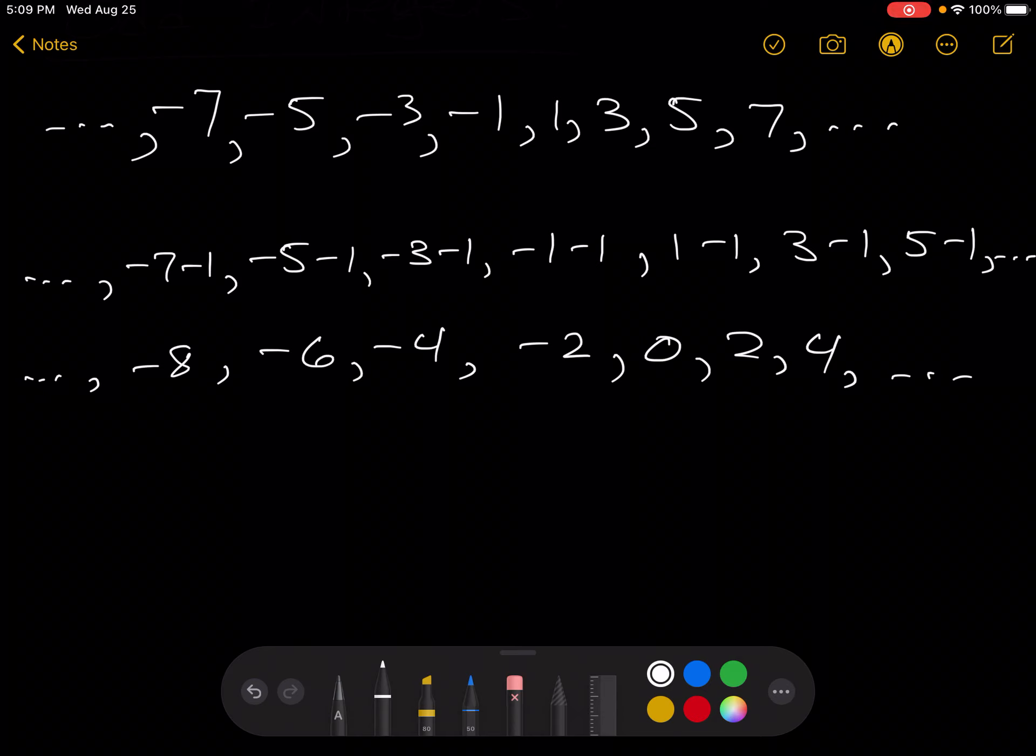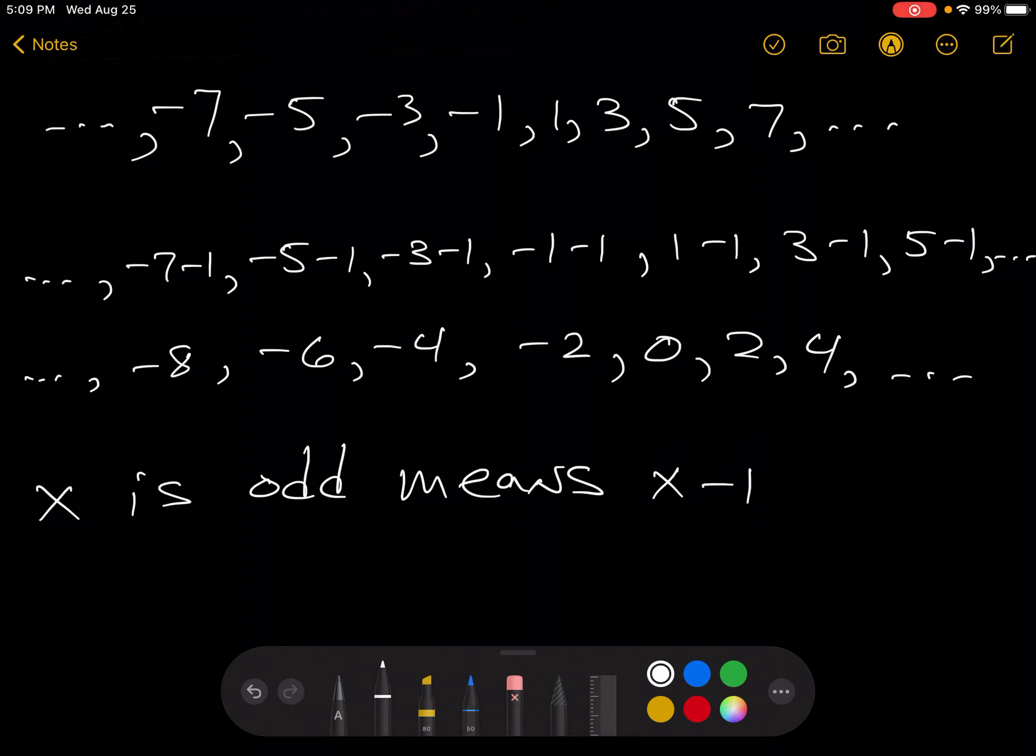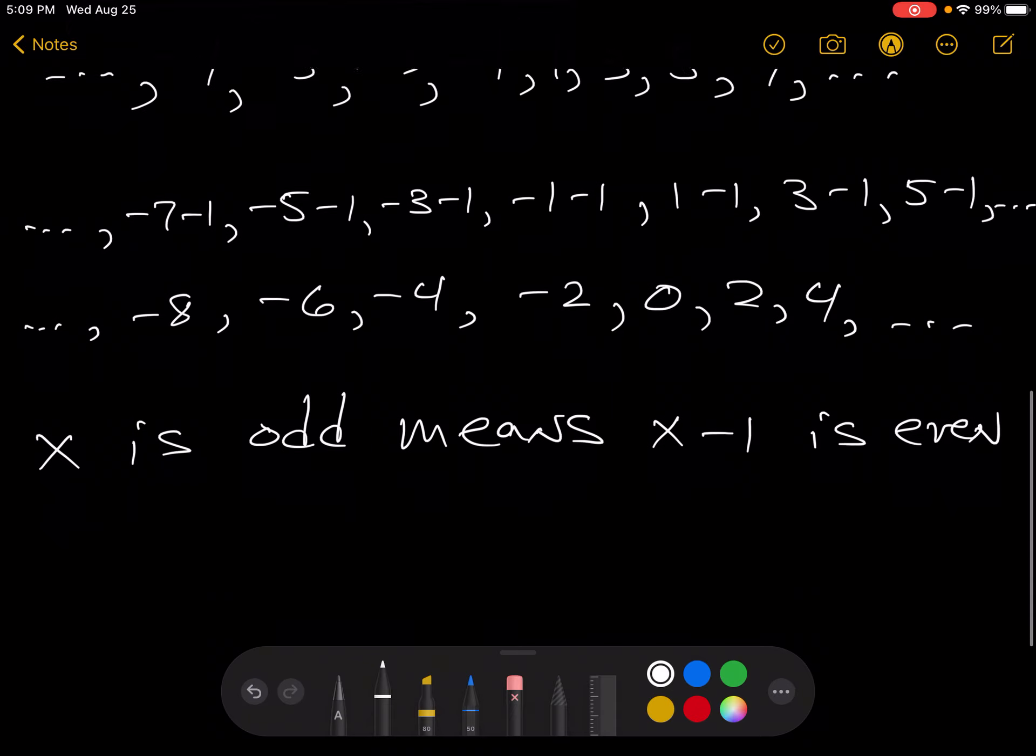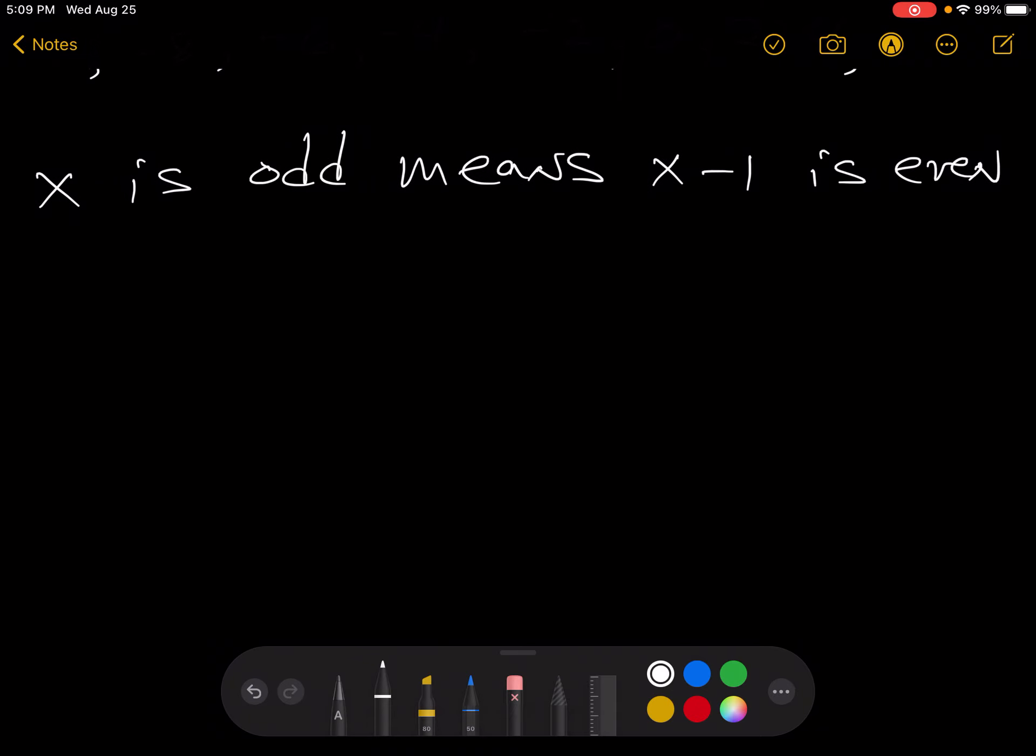So what this tells us, x is odd means x minus 1 is even. What does it mean for x minus 1 to be even? Remember what this means.